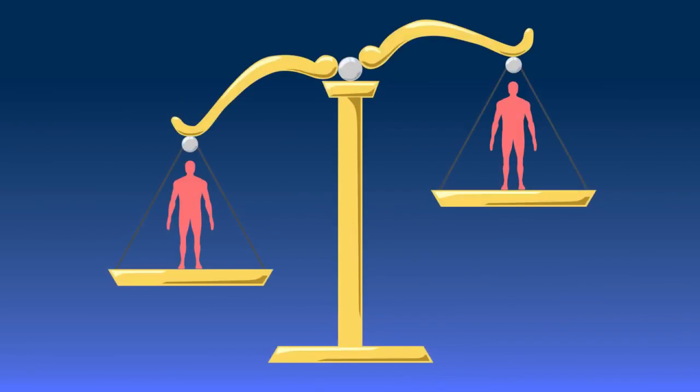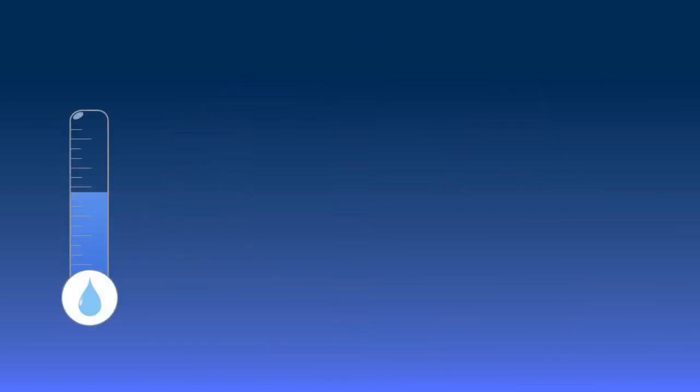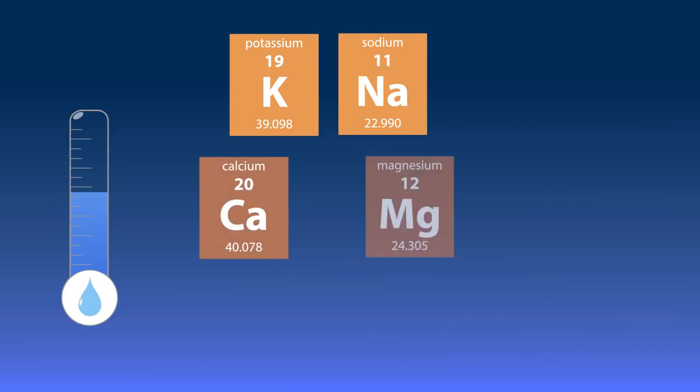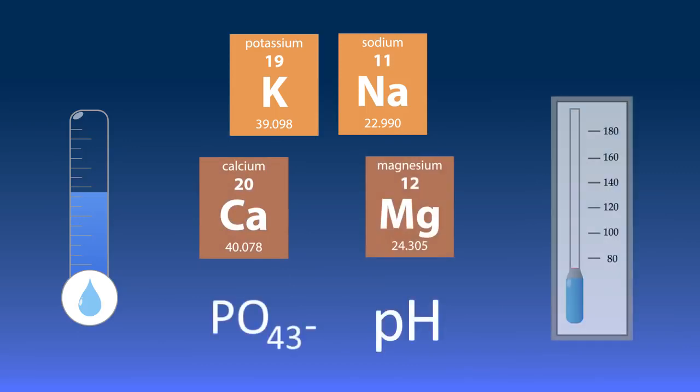Keeping your body balance is very important and the urinary system plays an important role in this. It keeps the water levels, ions such as potassium, sodium, calcium, magnesium and phosphate, pH and blood pressure as close to constant as possible.